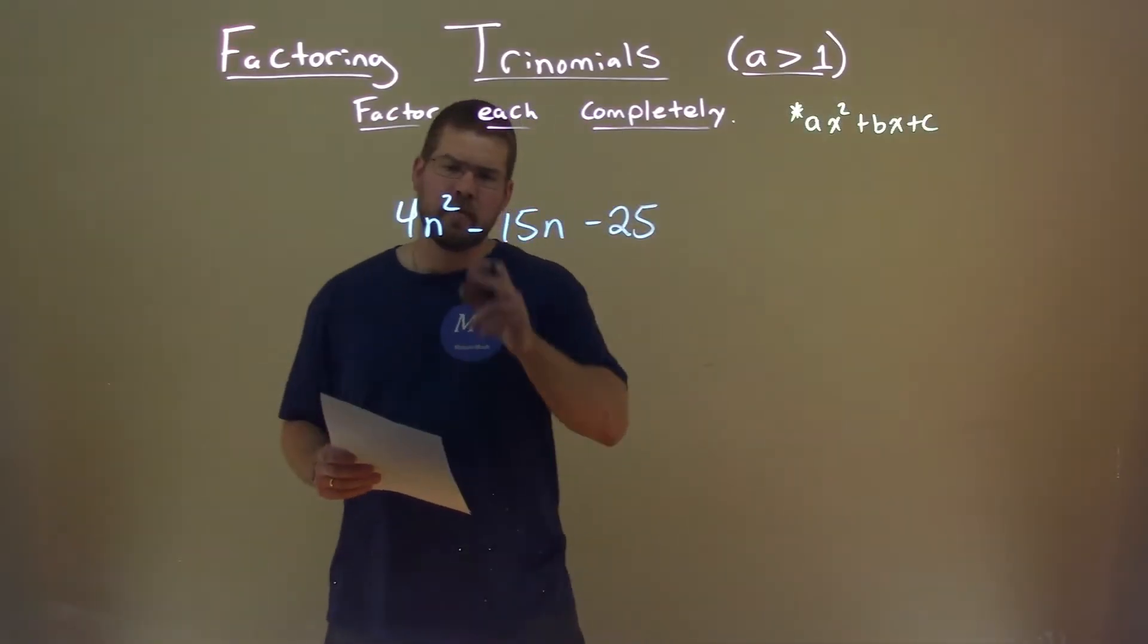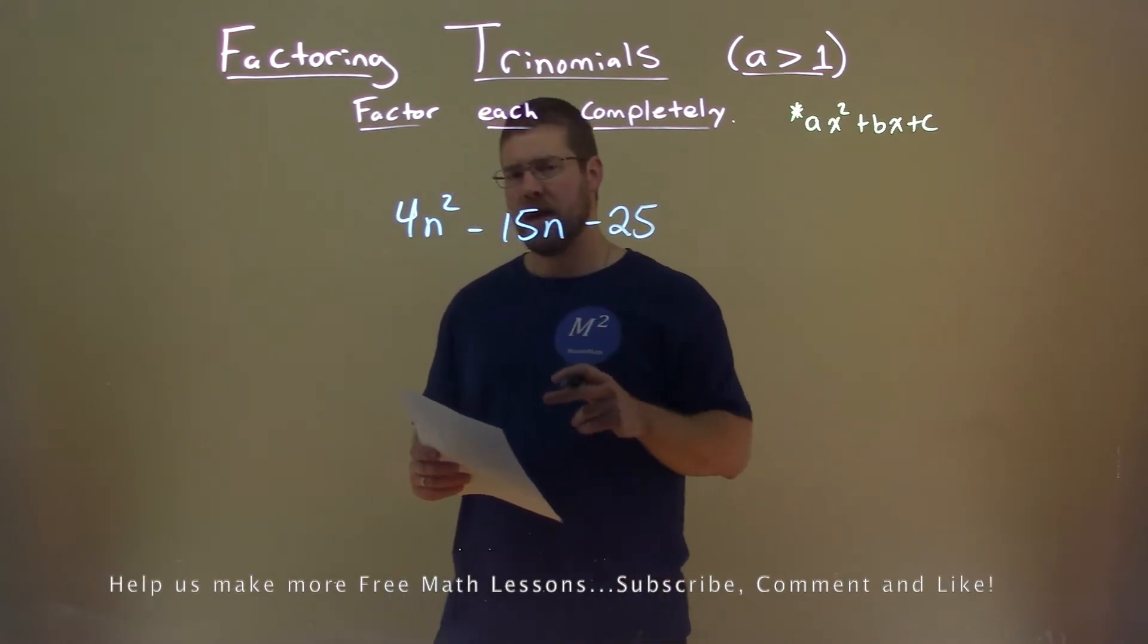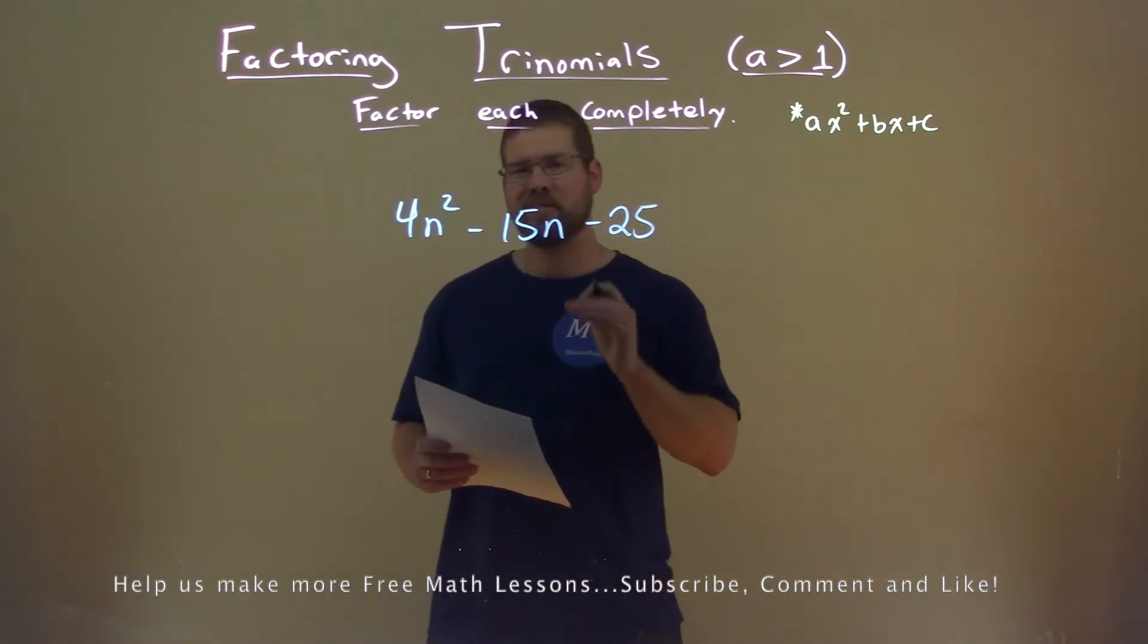We're given this problem right here: 4n squared minus 15n minus 25, and we want to factor this completely.